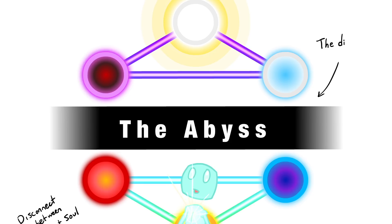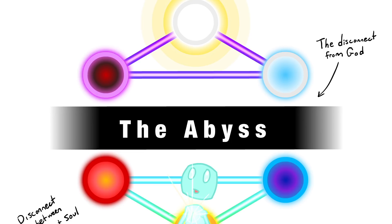The third barrier is called the abyss, which is between the upper two triangles. This represents the ultimate disconnect from spirit that we all experience and why we believe we are separate from everything. This abyss was created in the fall of consciousness.